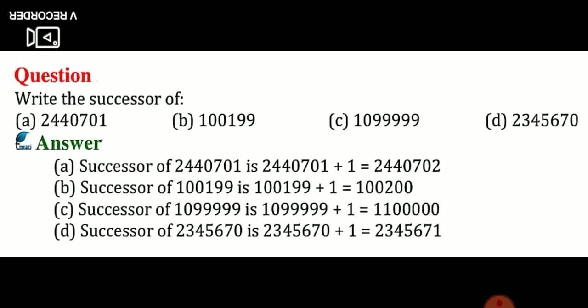Next, B: write the successor of 1,199. By adding 1 to 1,199 you will get the successor number. So 1,199 plus 1 is equal to 1,200. 1,200 is the immediate next number. Therefore, the successor of 1,199 is 1,200.